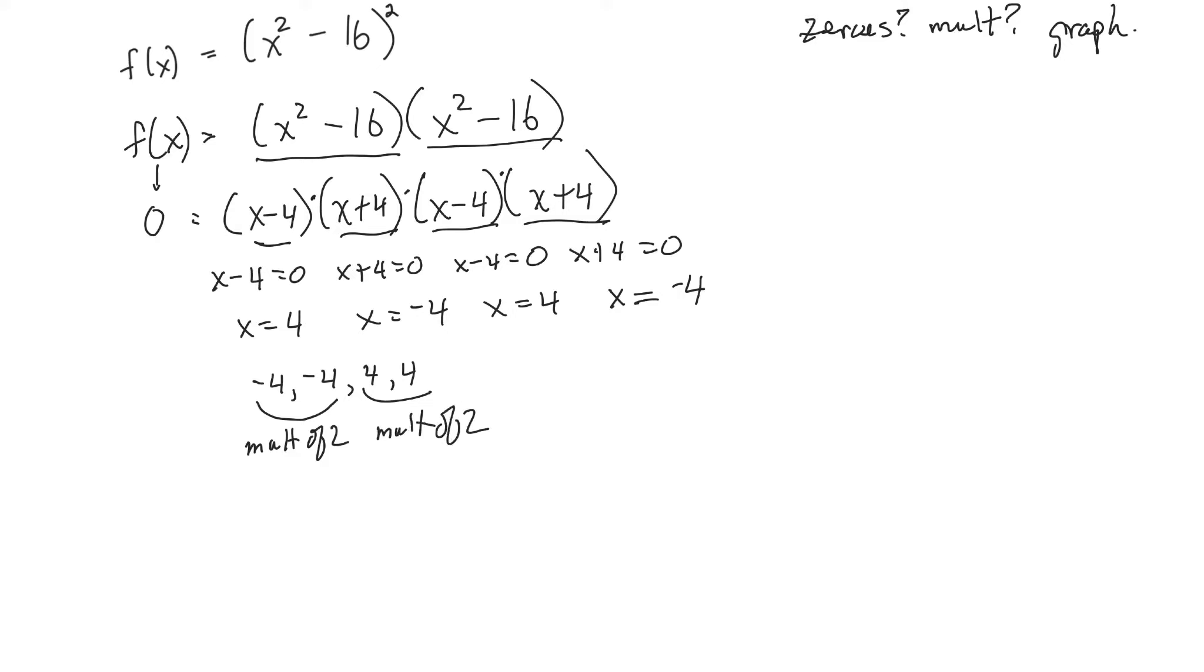Now if you wanted to graph that, we could. Since there's four zeros, I know it's a quartic graph. So quartic graphs either look like this, or they look like this. Since it's a positive quartic, it's going to look like that one. So I have to have that kind of shape with these zeros down here.